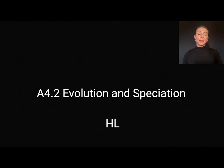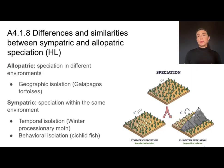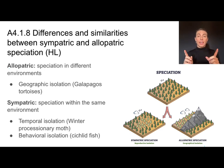In this video, we'll take a closer look at the higher level content from A4.2 on evolution and speciation. In order for speciation to occur, two groups must be reproductively isolated, and that can happen in one of two ways.